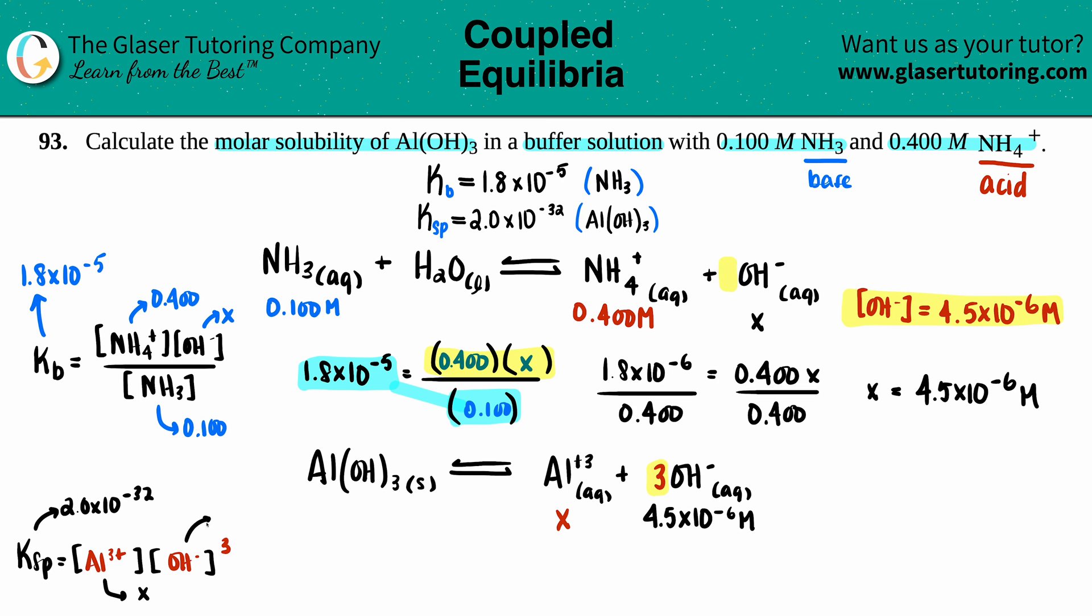This was x and the OH concentration is 4.5 × 10⁻⁶. Okay, let's go for it. 2.0 × 10⁻³² equals we have x times 4.5 × 10⁻⁶ and that is cubed. So we could just find out what that number is: 4.5 × 10⁻⁶ cubed.